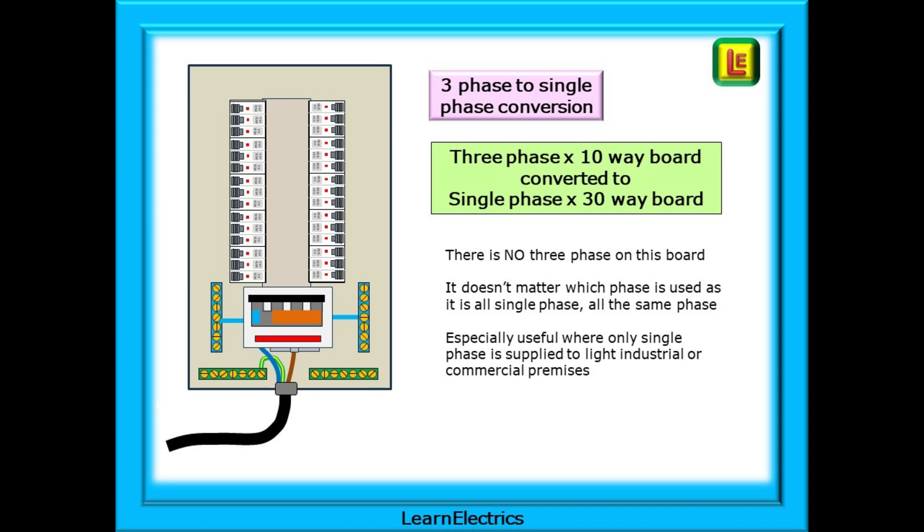Our 10-way three-phase distribution board is now a 30-way single-phase board. Useful if you only have single-phase and you need lots of individual circuits. Install the appropriate single-phase circuit breakers, RCBOs, SPDs, and so on, and all should be good. This could also be a sub-board, a single-phase supply from a three-phase board to an area in the unit where only single-phase is required. Of course, domestic-type consumer units could be used and they do come in double-height units and may be more appropriate for what the customer wants.